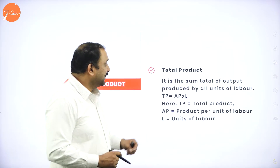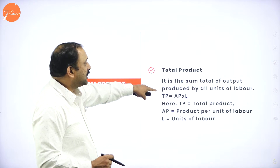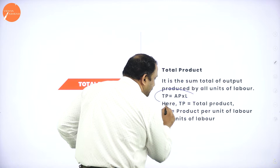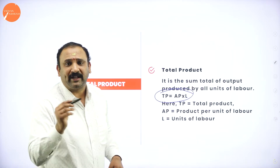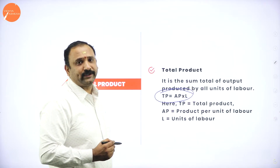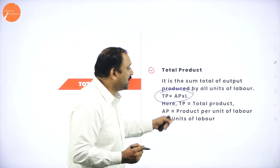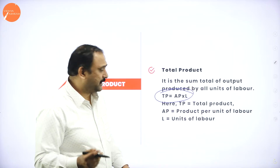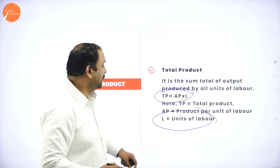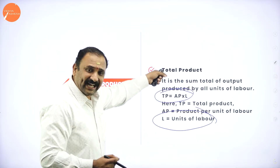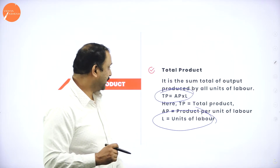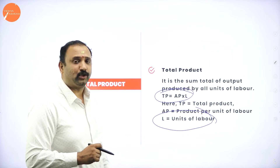The first concept is total product. It is the sum total of output produced by the units of labor. TP is given by AP into L, where TP stands for total product, AP stands for average product — that is output per unit of labor — and L is the units of labor. So when we multiply AP into L, that gives rise to the total product.